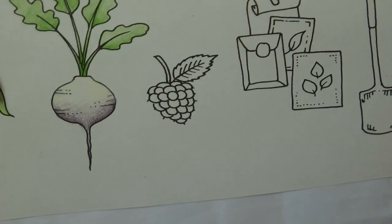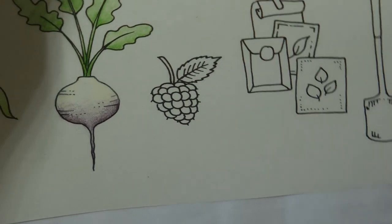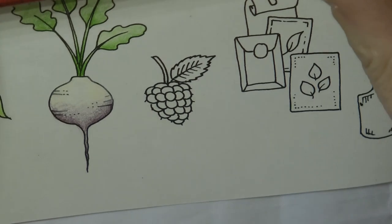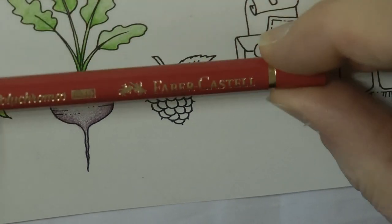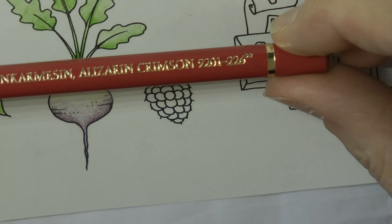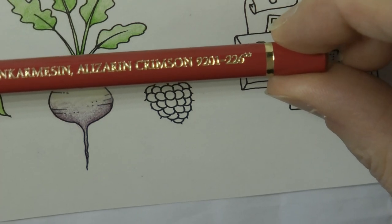Today we're going to be coloring in this little tiny raspberry from Worlds of Wonder by Johanna Basford. We're using Polychromos, Faber Castell, and I'm starting with the Alizarin Crimson.